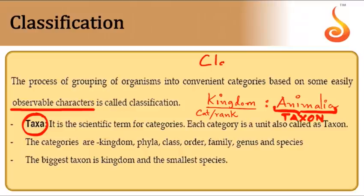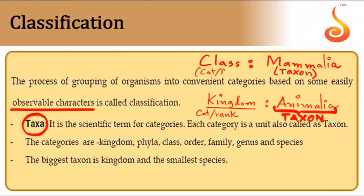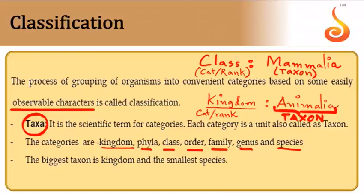Another example: Class Mammalia — mammalia is a taxon because it includes real organisms (mammals), and 'class' is the category or rank. The hierarchy from highest to lowest is: Kingdom, Phylum, Class, Order, Family, Genus, and Species. This is referred to as the Linnaean hierarchy. The lowest category is Species and the highest is Kingdom.